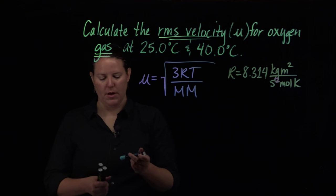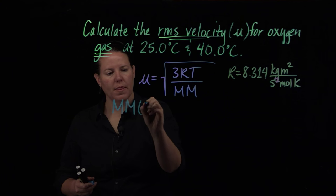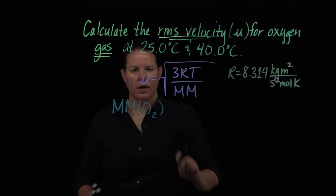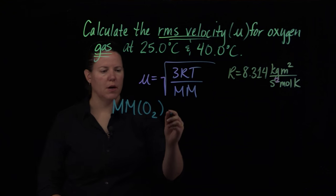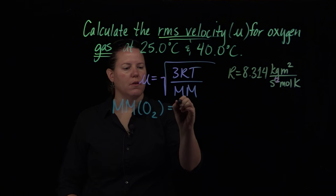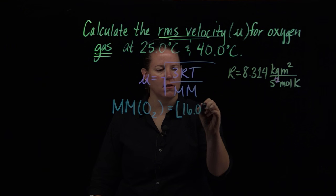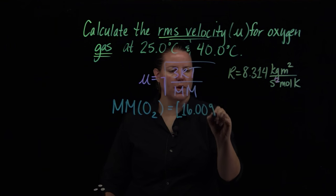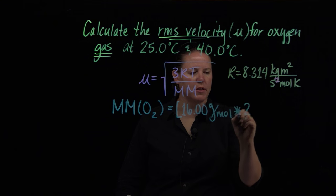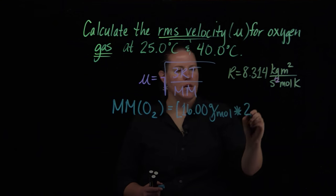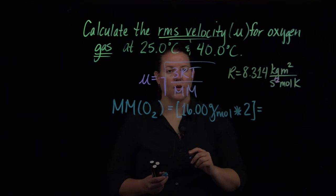I'm going to do this a little bit differently. I'm going to calculate the molar mass of oxygen, remembering that oxygen as a gaseous molecule is naturally diatomic. I look up the molar mass of each oxygen on the periodic table, that's 16.00 grams per mole. Since there are two of them, I multiply that by 2.